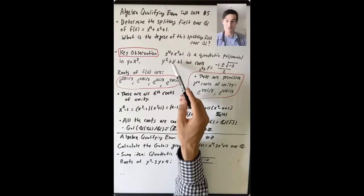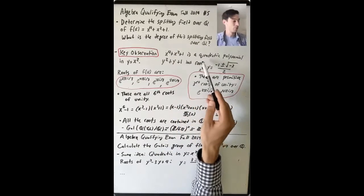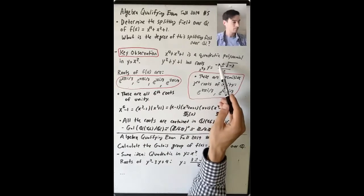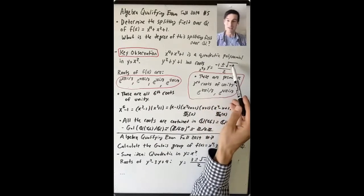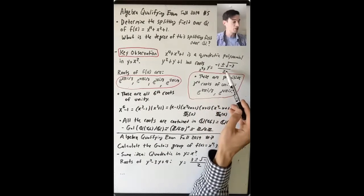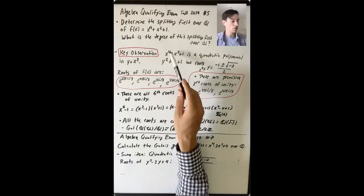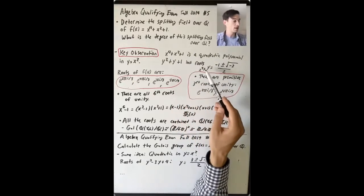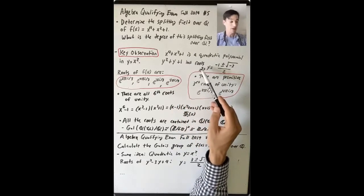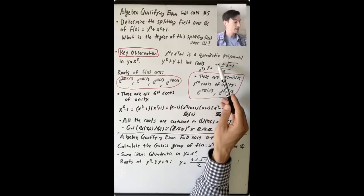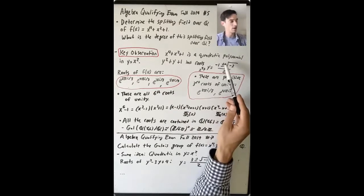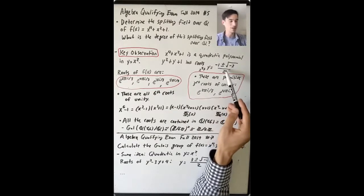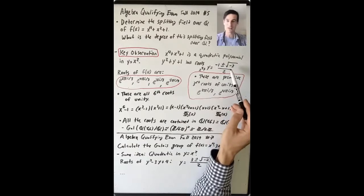I know the roots of y² + y + 1. The roots are y = (−1 ± √(1 − 4)) / 2 = (−1 ± √(−3)) / 2. So the roots of x⁴ + x² + 1 are values of x for which x² = (−1 ± √(−3)) / 2. This is familiar — these are the primitive third roots of unity.